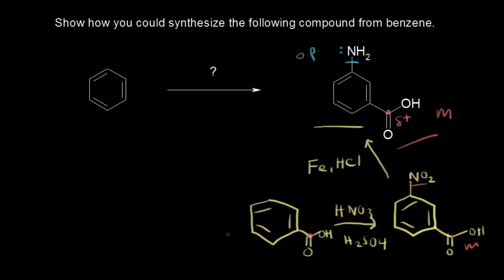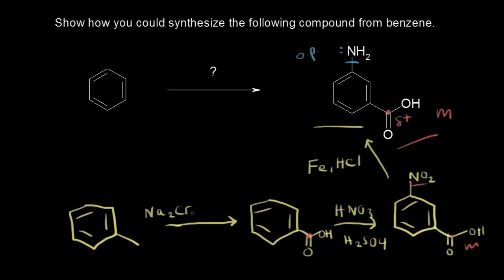Now I have benzoic acid, and I need to make benzoic acid from benzene. From the benzylic position video, we were able to create a benzoic acid molecule from an alkyl benzene. So the immediate precursor must be some sort of alkyl benzene — a benzene ring with an alkyl group. I'll use a methyl group, so toluene, as our immediate precursor to benzoic acid. To oxidize the alkyl side chain, I need sodium dichromate (Na2Cr2O7), sulfuric acid as a source of protons, and heat.